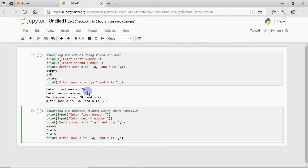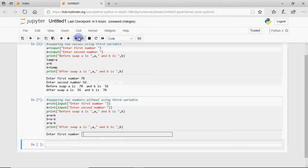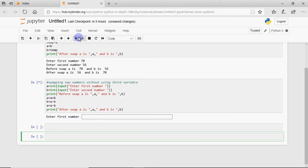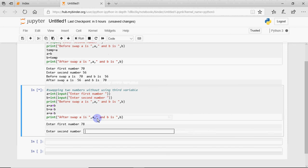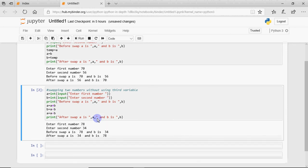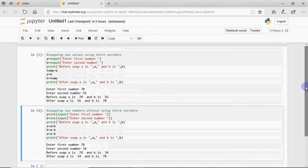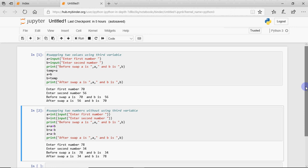That's it. So that's the code, and we execute it, and we enter any two numbers. And the second number is this, and the values are interchanged. So that is how we can use both the codes.